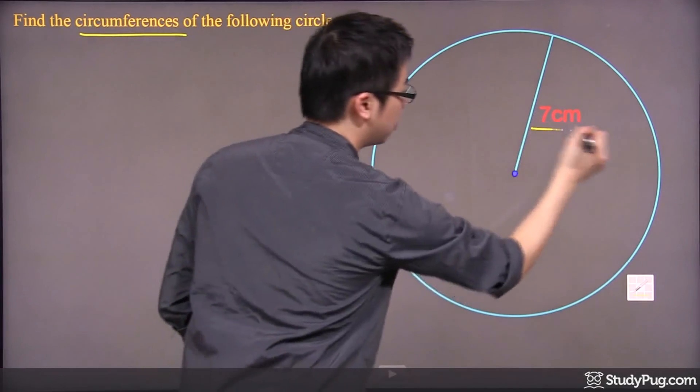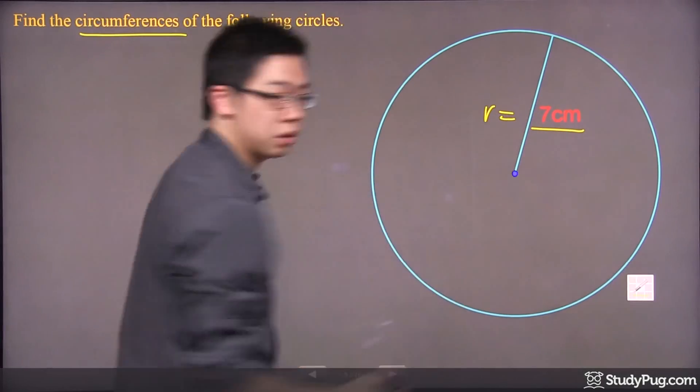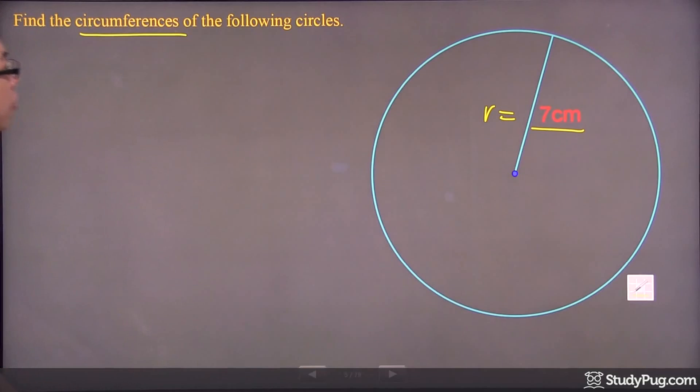From the circle you'll notice this is your radius because it's from the center to the side of the circumference.